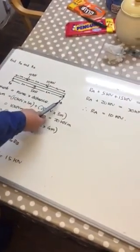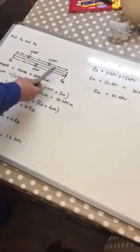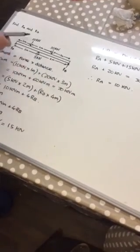So then we could do a quick check. If Ra is 10, that's 5, and Rb is 15. 15 plus 5 is 20 plus 10 is 30. The downward force is 10 plus 20 is 30. Therefore I think we've got the right answer.